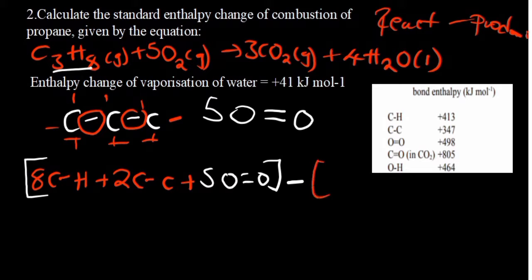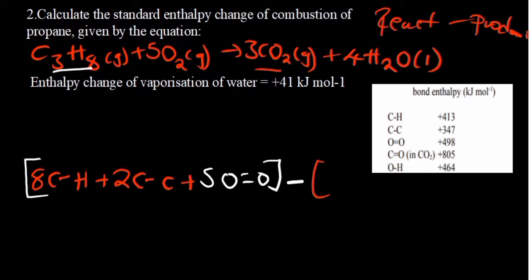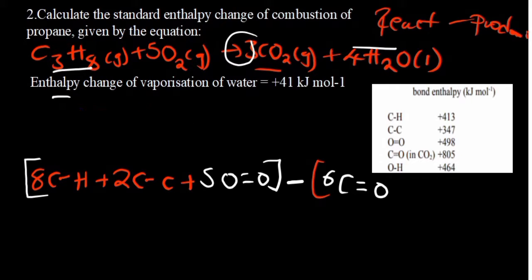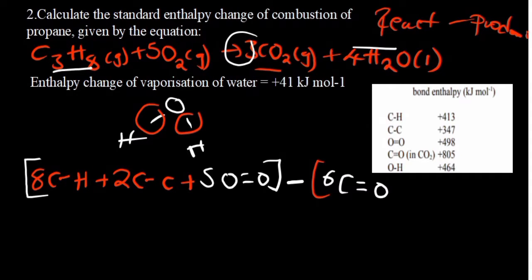For the products we have carbon dioxide. Carbon dioxide is linear — we only have one type of bond: carbon to oxygen double bond. There are two of these per CO2 molecule, and there are three CO2 molecules, so two by three gives us six carbon to oxygen bonds. Then we have water, H2O: an oxygen atom connected to two hydrogen atoms, only oxygen to hydrogen bonds. There are two per molecule and four water molecules, so eight oxygen to hydrogen bonds.